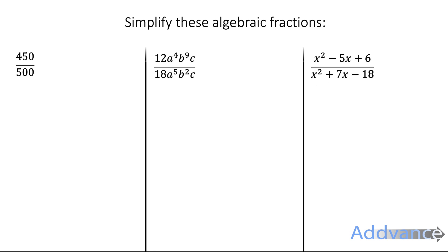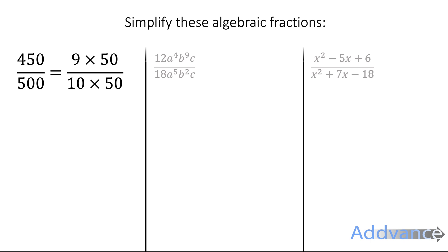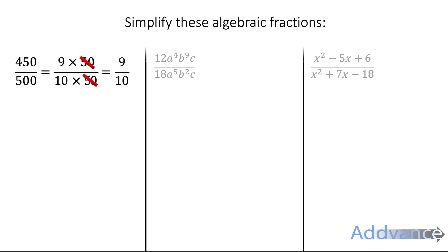The first fraction is just a normal fraction: 450 over 500. Well, 450 is the same as 9 times 50, and 500 is the same as 10 times 50. When simplifying fractions, all we do is divide the top and the bottom by the same thing. Divide by 50 and divide by 50, we get 9 over 10, and that is the final answer.